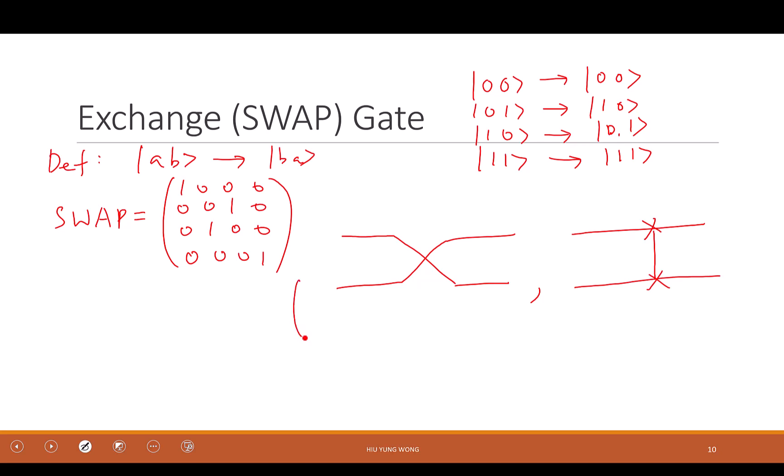So you come in as alpha, beta, gamma, delta. Your output becomes alpha, gamma, beta, delta. Now, why is that, right? Let me, let's just be careful, right? We can think it this way.